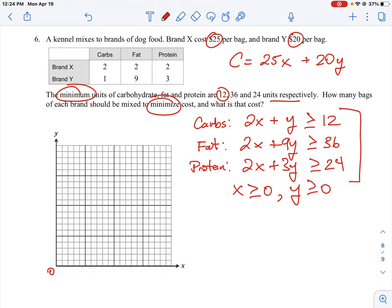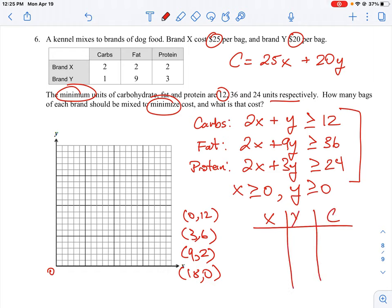And we can do a simple, we'll just write the points down here. So we have 0, 12, 3, 6, 9, 2, and 18, 0. So I would just do a simple t-table. We'll do X, Y, and then our cost, and then we'll just plug in our numbers. And then we'll just calculate which gives us the smallest value for cost.